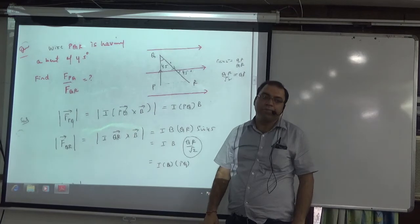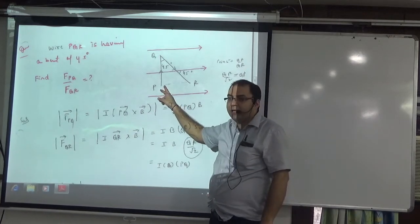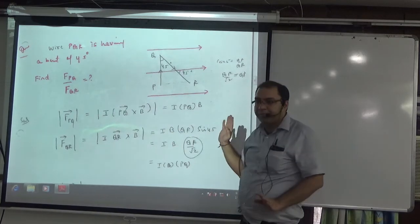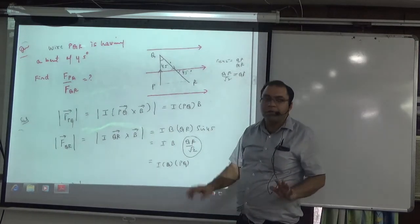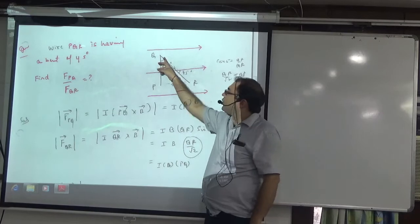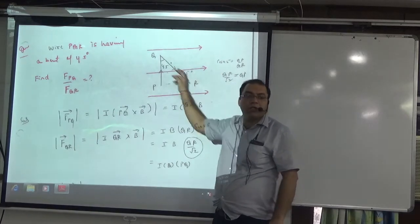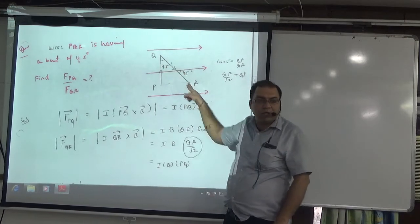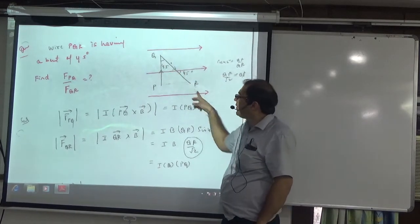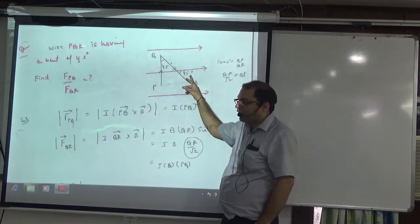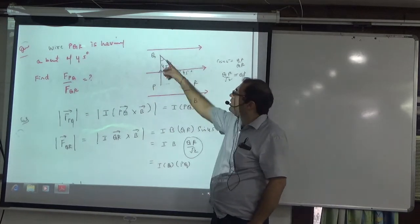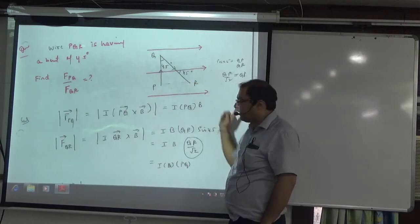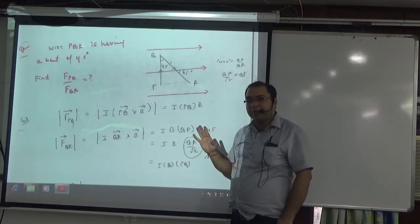In the case of PQ length: force is B, I, L, PQ, sin of 90°. Then on QR: current is going from Q to R, so length is QR. The angle between B vector and length vector is 45°. So force is B, I, length of QR, sin 45°. This step is clear.